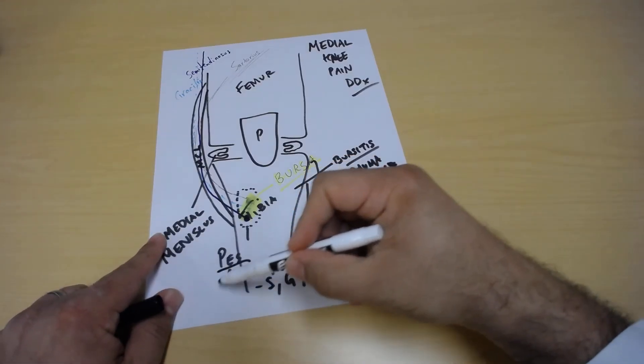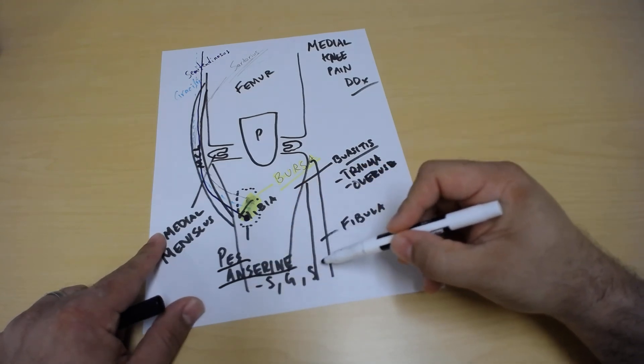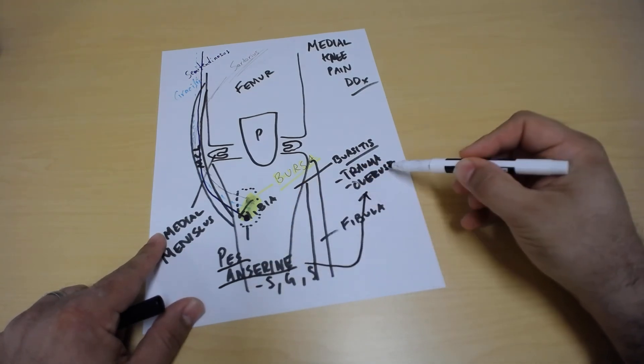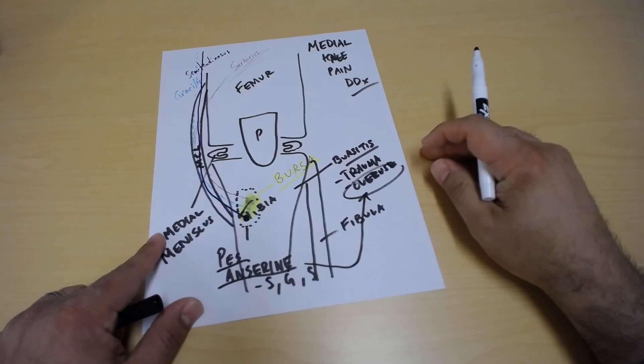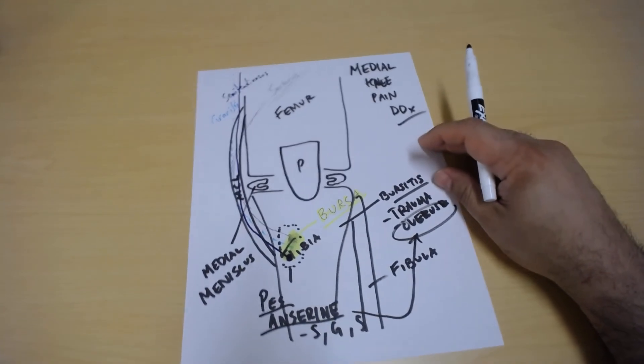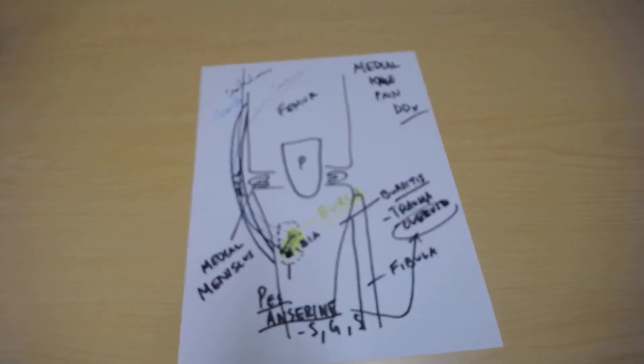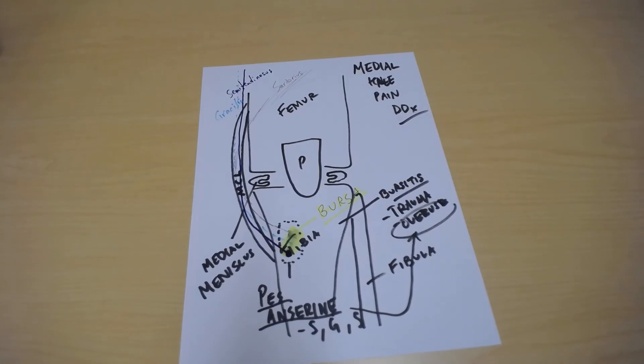The same thing with the pes anserine, but most commonly the pes anserine happens with overuse. So this is again just a simple overview of medial knee pain when someone presents to your office, helping yourself determine what you would consider to be your differential diagnosis.